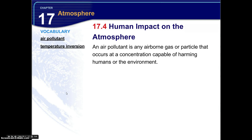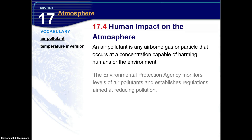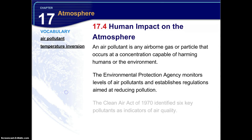An air pollutant is any airborne gas or particle that occurs at a concentration capable of harming humans or the environment. The Environmental Protection Agency monitors levels of air pollutants and establishes regulations aimed at reducing pollution. In the United States, the Clean Air Act of 1970 identified six key pollutants as indicators of air quality.